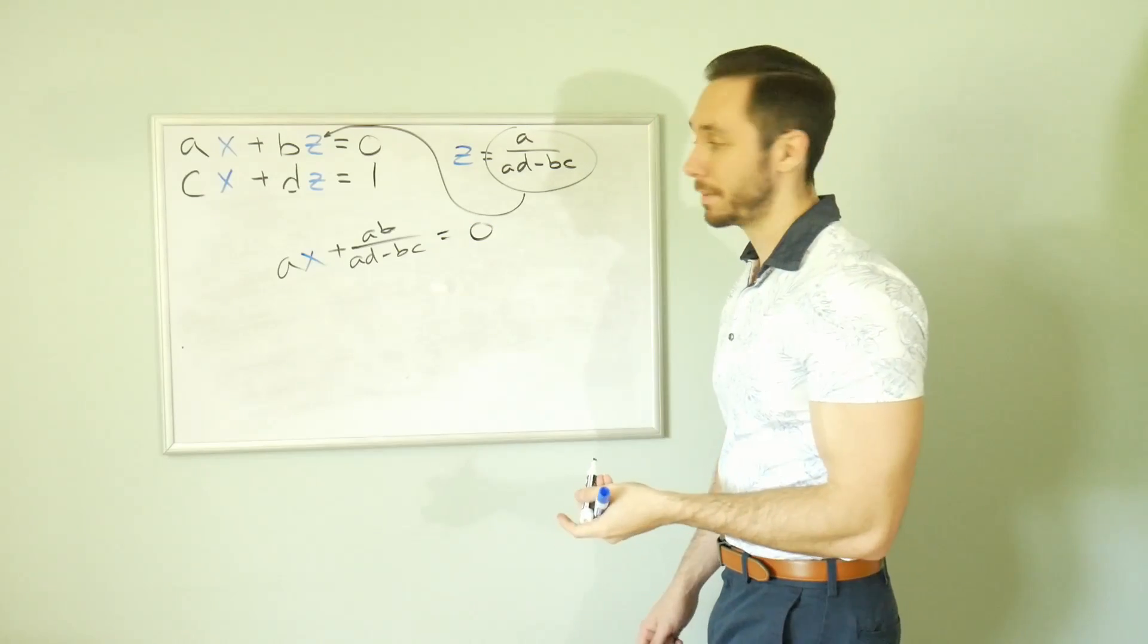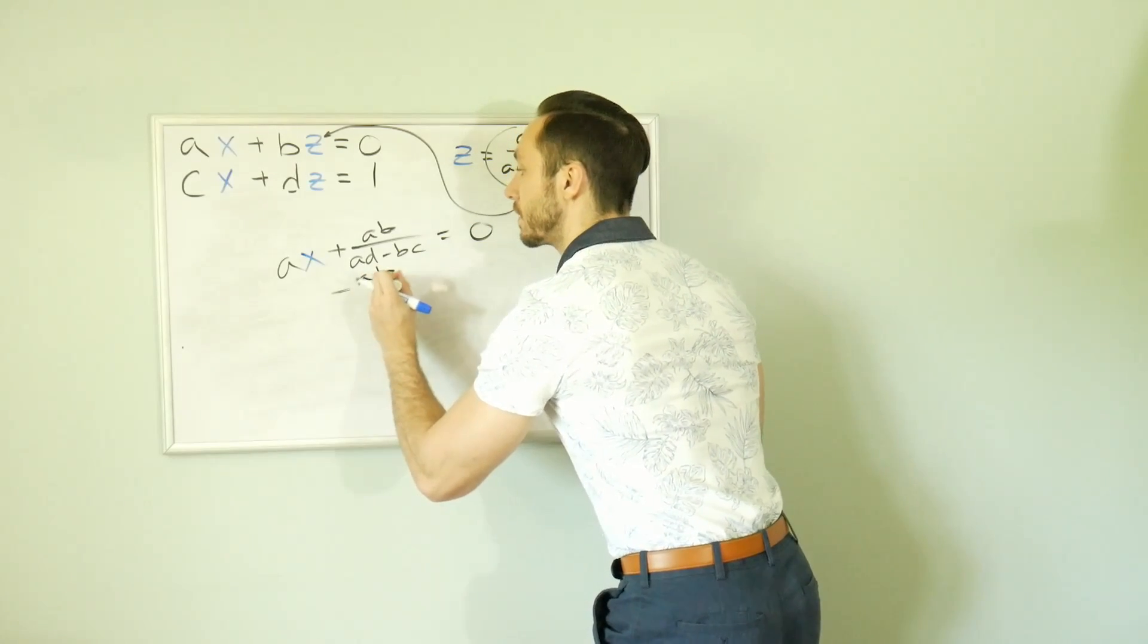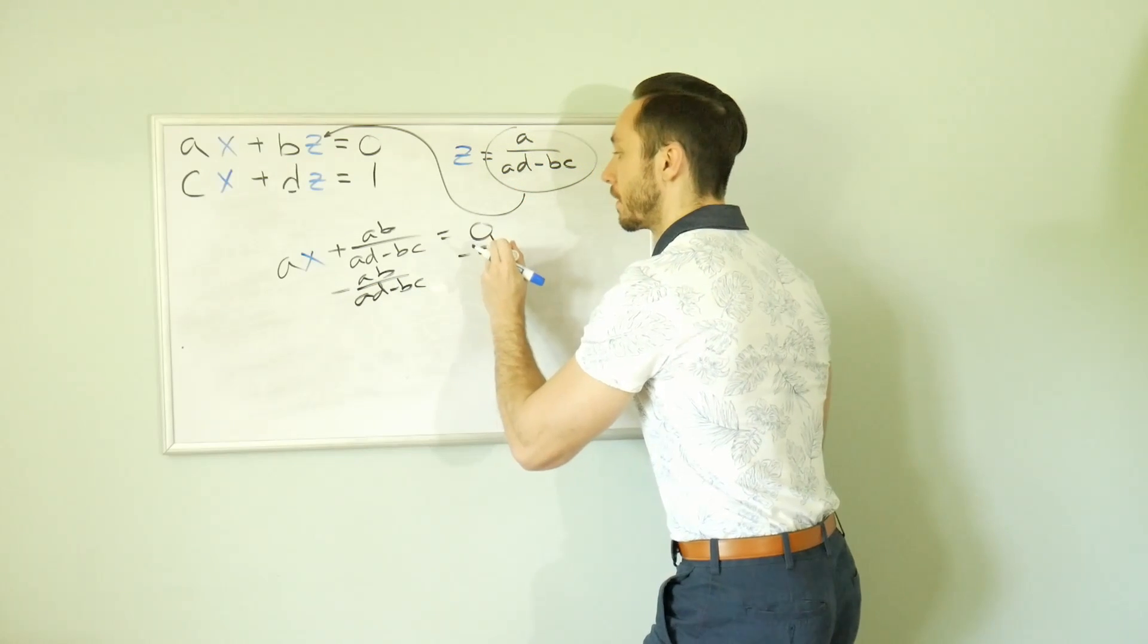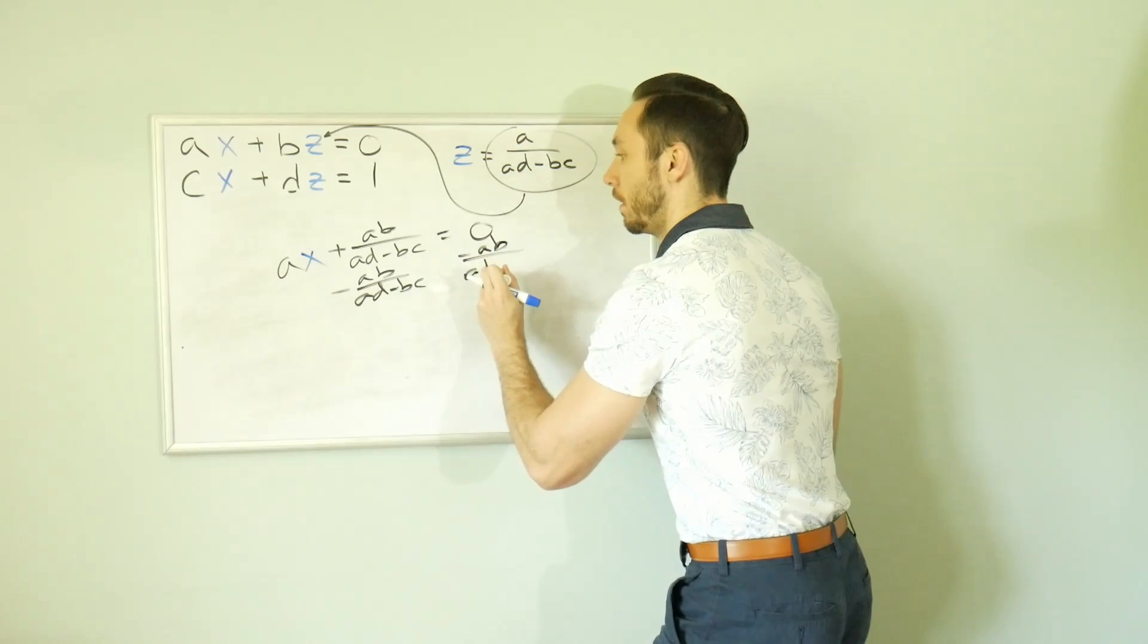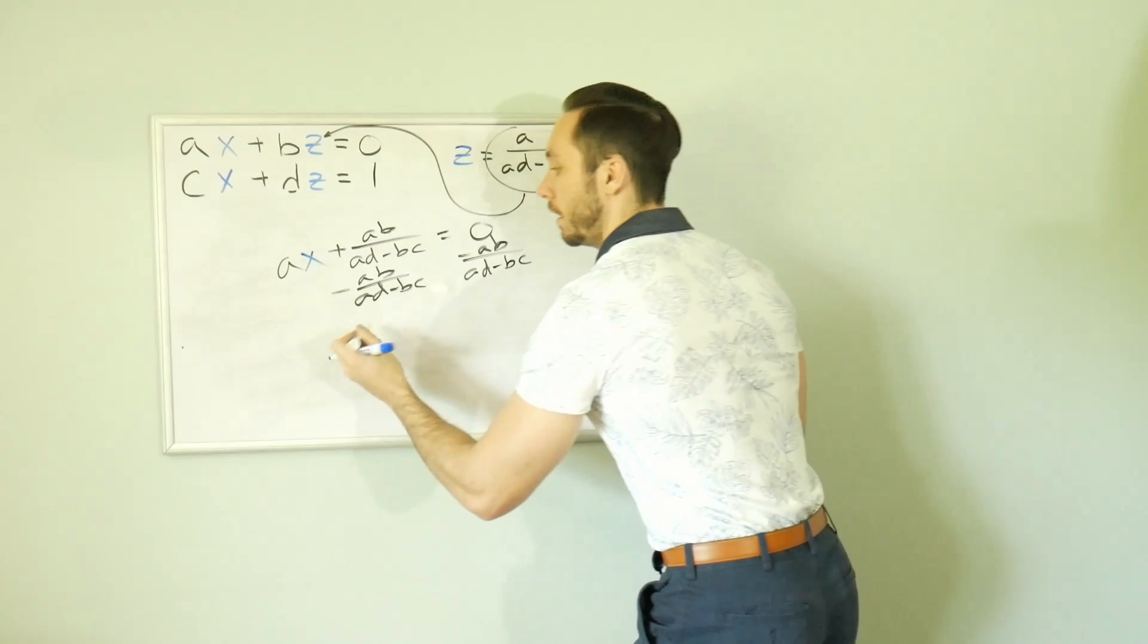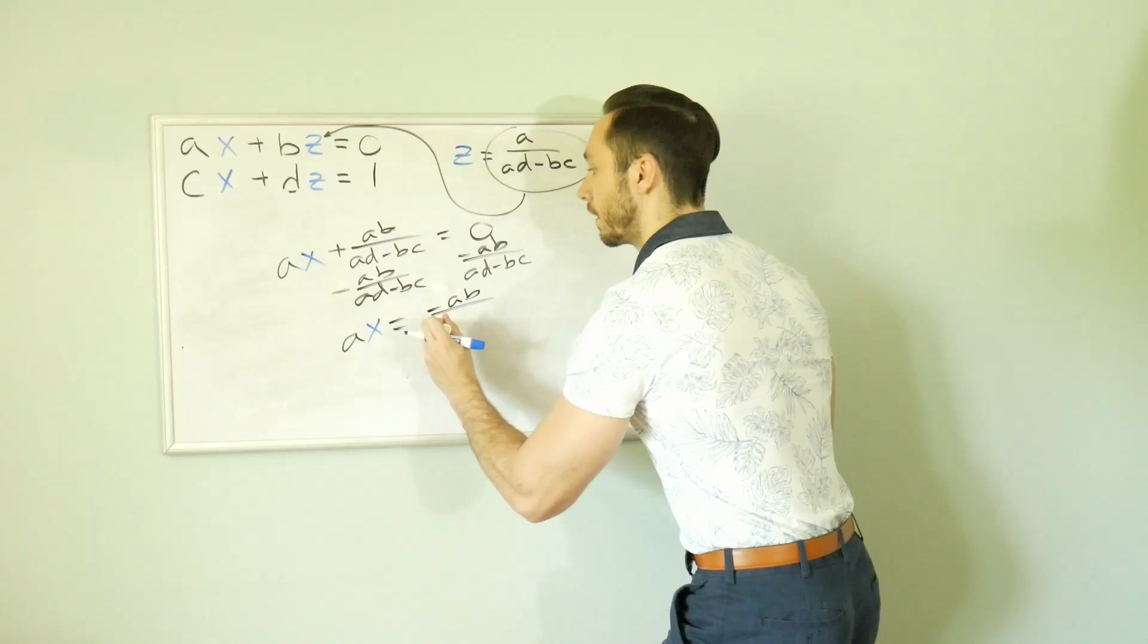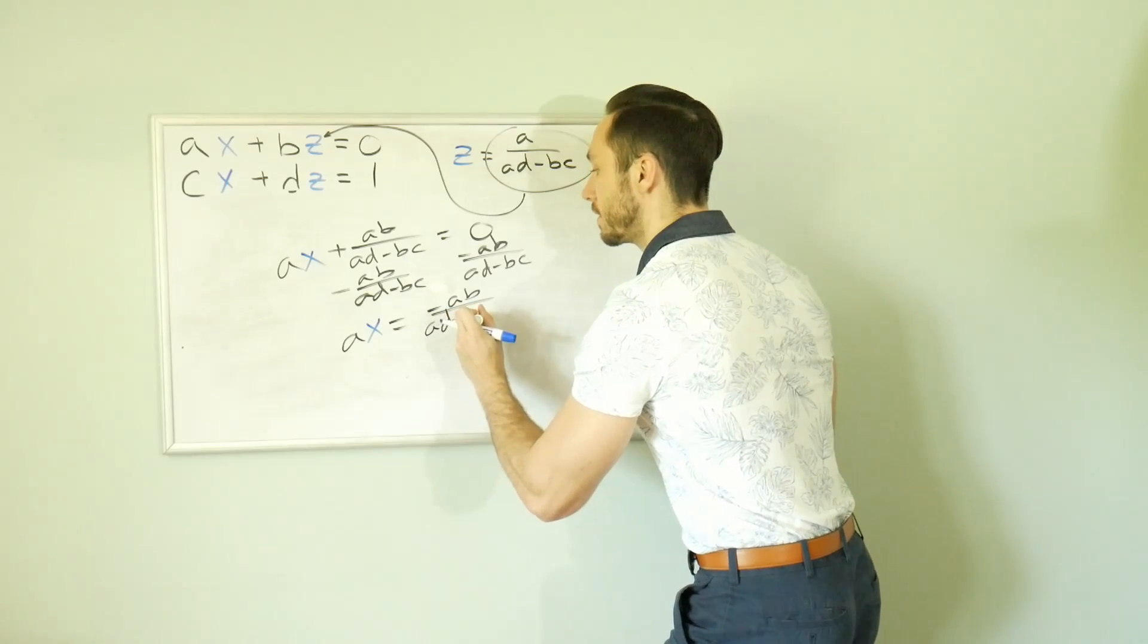Almost there. It's actually a two-step equation. Subtract this from both sides from our equation. We're going to get AX is equal to negative AB over AD minus BC.